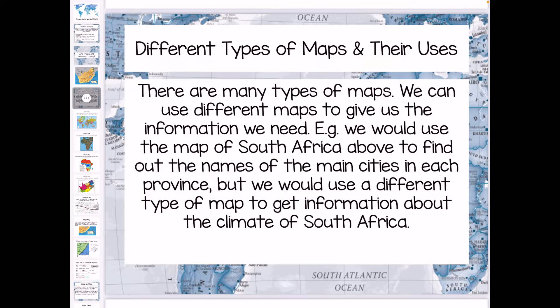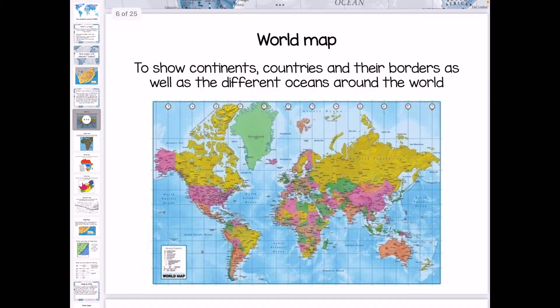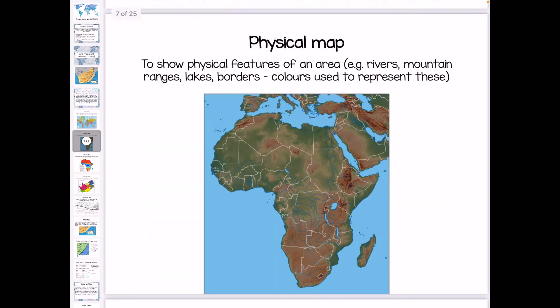We get different types of maps and they all have different uses. For example, there are world maps that show us continents, countries, their borders, as well as different oceans around the world. We get physical maps that show us physical features and they always use color to represent these. You can see on the east side of Africa there is a little bit more greenery than on the west side, especially in the southern hemisphere, because we have the Indian Ocean on the right-hand side.